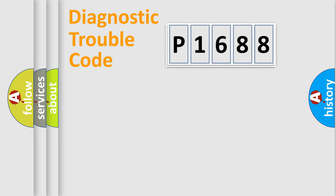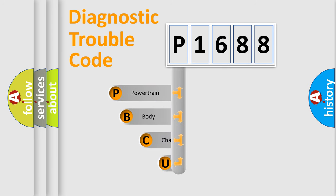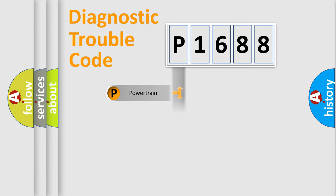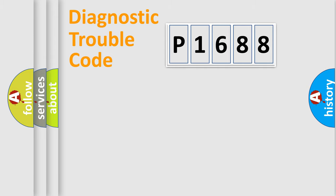Let's do this. First, let's look at the history of diagnostic fault code composition according to the OBD2 protocol, which is unified for all automakers since 2000. We divide the electric system of an automobile into four basic units: Powertrain, Body, Chassis, and Network.